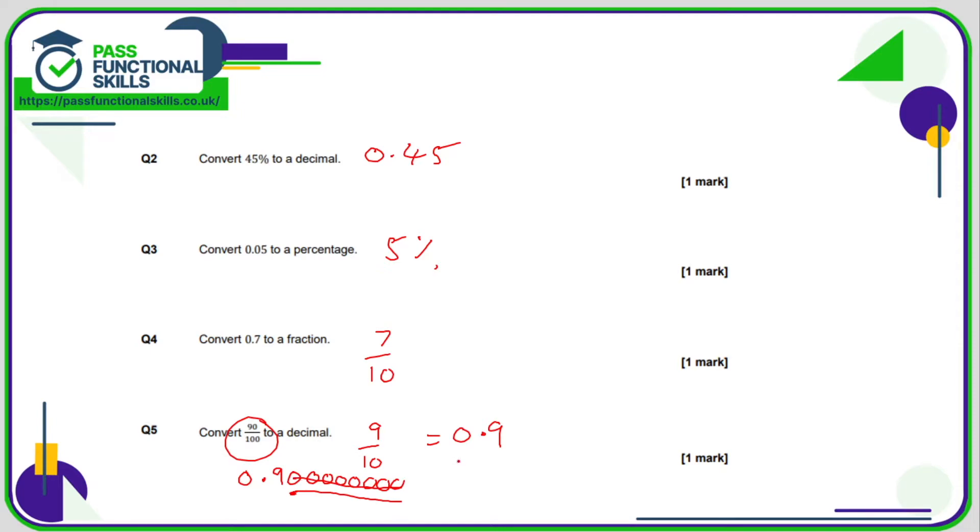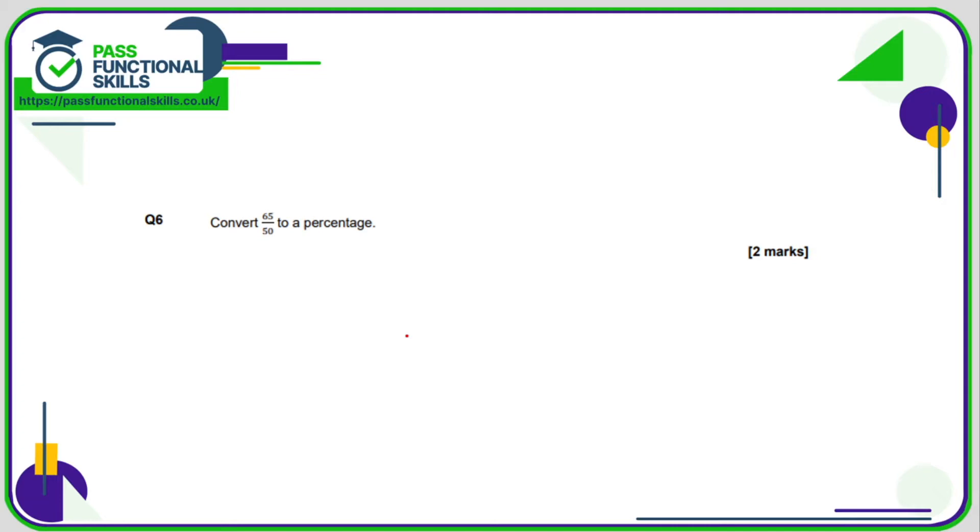If you write it as 0.90, that's correct, but just get rid of the zero because it's much tidier as 0.9. So question number six, we can use a calculator now to convert a fraction into a percentage. It's top divided by bottom multiplied by 100.